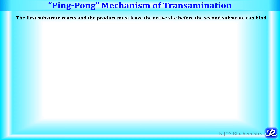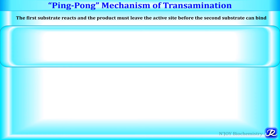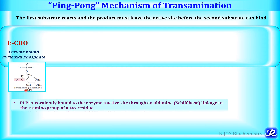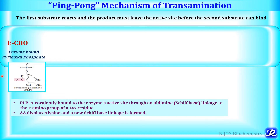Transamination occurs by a ping-pong mechanism. In this mechanism, the first substrate binds to the active site of the enzyme and there is formation of a product. That product must leave the active site before the second substrate can bind. Pyridoxal phosphate is a carrier of amino group in the transamination reaction. Looking at alanine transaminase as an example: pyridoxal phosphate has an aldehyde group, and this aldehyde group is covalently bound to the enzyme's active site through a Schiff-base linkage to the epsilon amino group of a lysine residue. This is the enzyme-bound pyridoxal phosphate, which acts as a carrier of amino group by changing from pyridoxal phosphate to pyridoxamine phosphate.